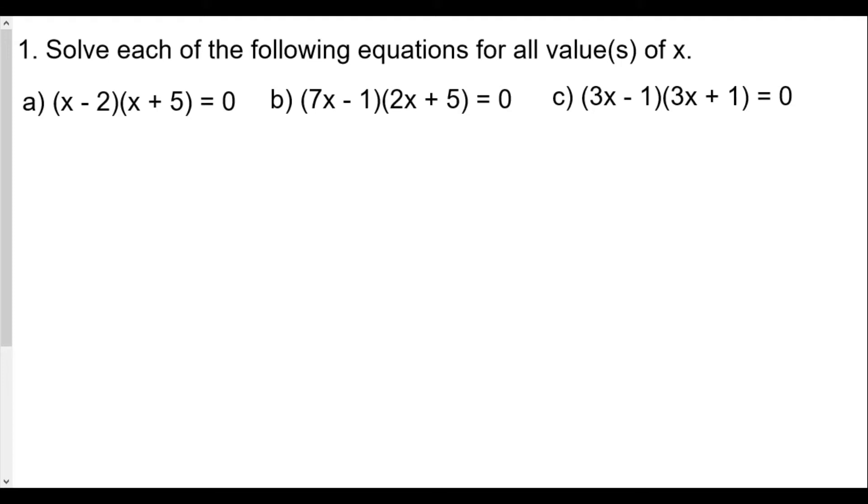Number one, solve each of the following equations for all value or values of x. For a, x minus 2 times x plus 5 equals zero. When we multiply two things and the product is zero, we know that one or the other is equal to zero. So we're going to set each of these factors equal to zero.